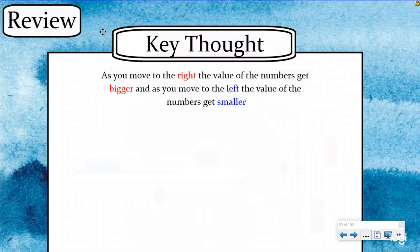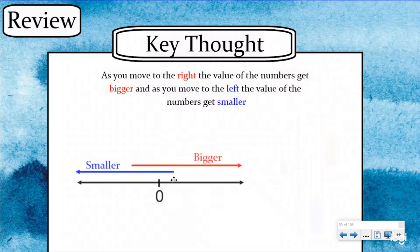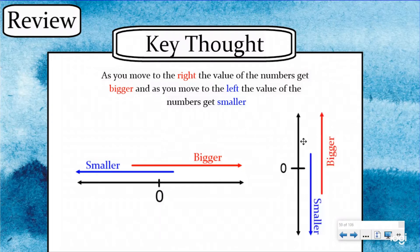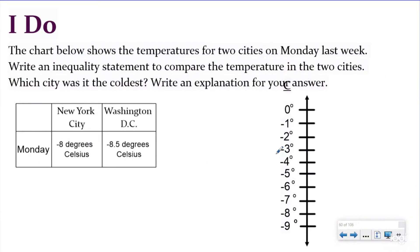Before we get started with our new material, let's review our key thought from last lesson. As you move to the right on the number line, the value of the numbers get bigger. And as you move to the left, the value of numbers get smaller. The same is true with our vertical number line — as you move further up, the numbers get bigger, and as you move further down, the value of the numbers get smaller. In today's lesson, we're going to be using the same concept and strategy that we learned in our comparing rational numbers using a number line, except now we're going to do it in a real world context.